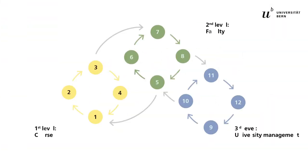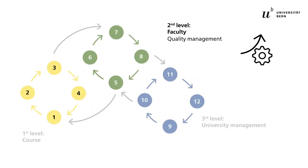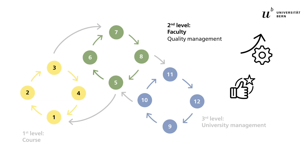In addition to the instructors and the students, the results of the surveys are used by two other university bodies. The most important in this regard is quality management at the individual faculties. They take specific measures for courses with insufficient results, and courses with excellent results can be formally recognized by the faculties.